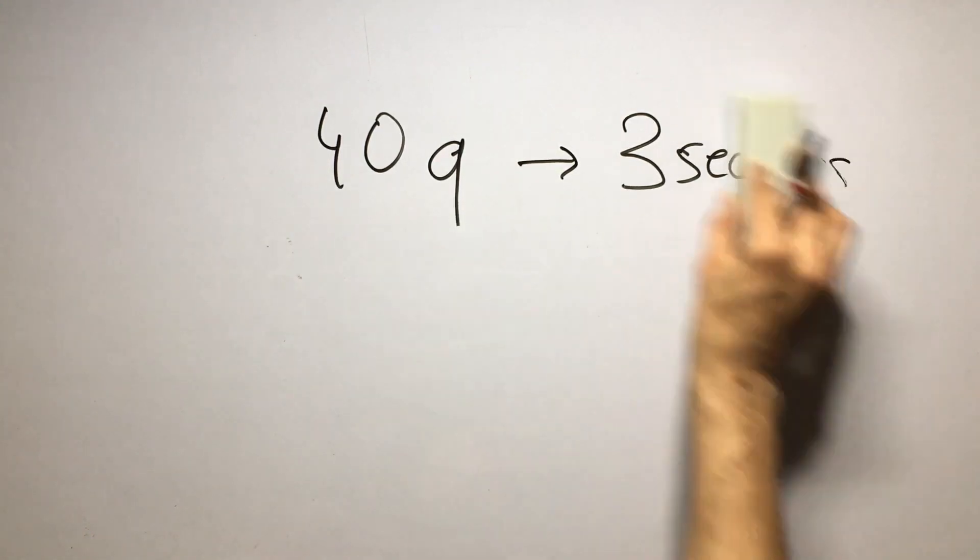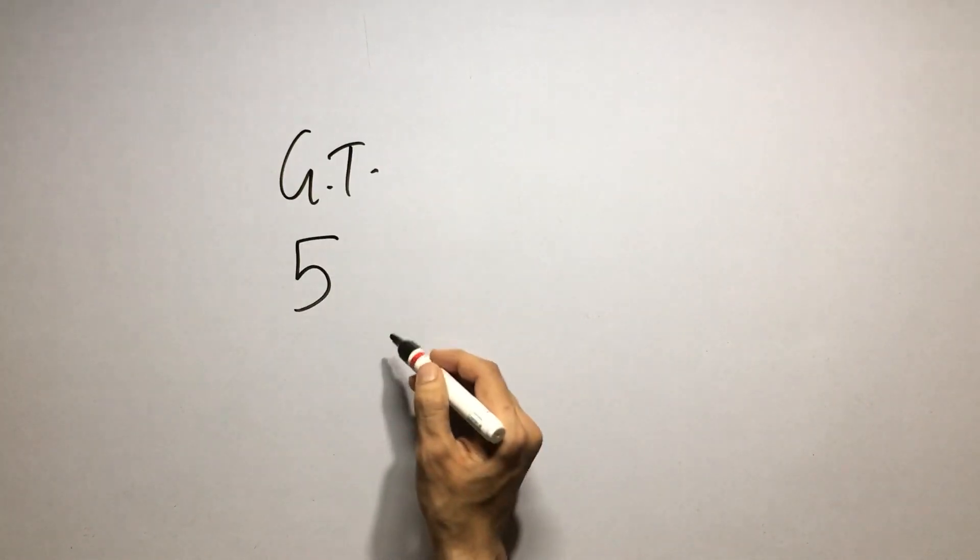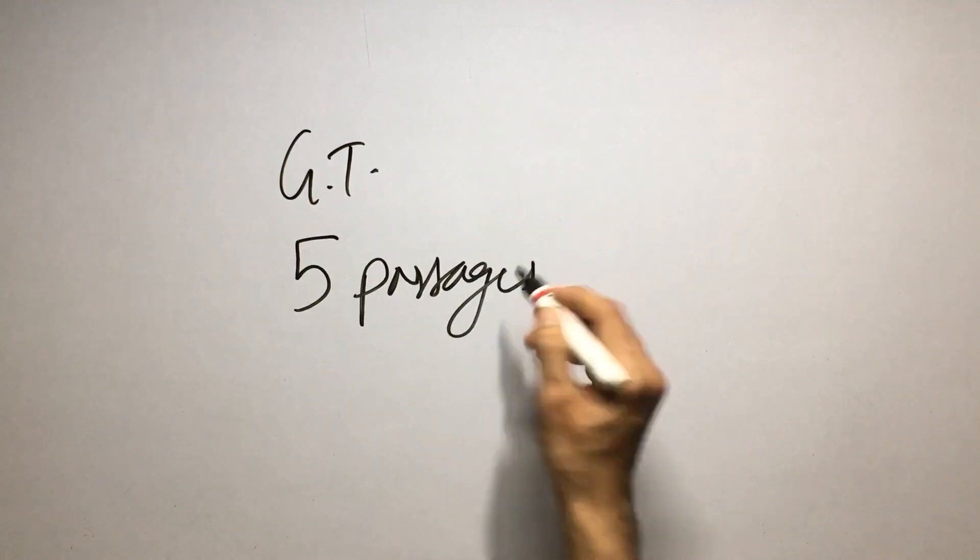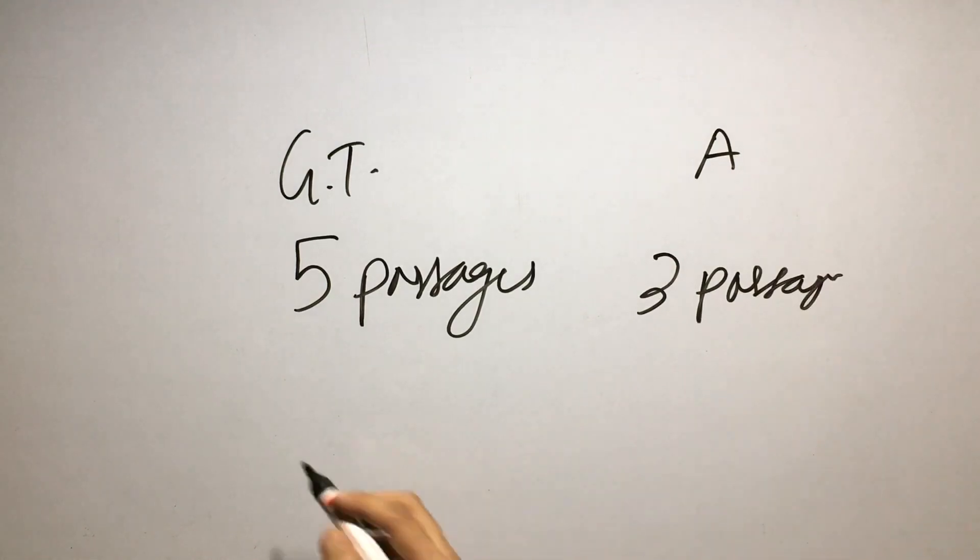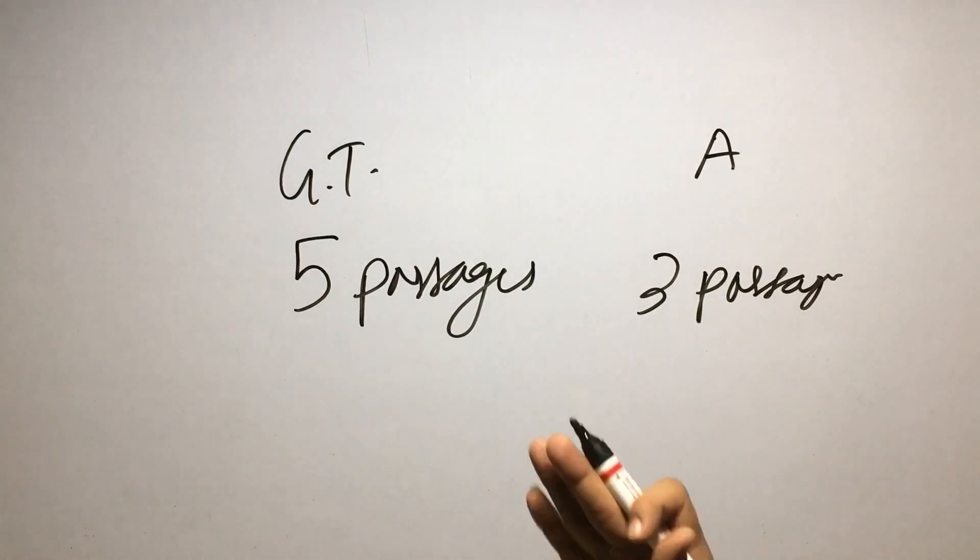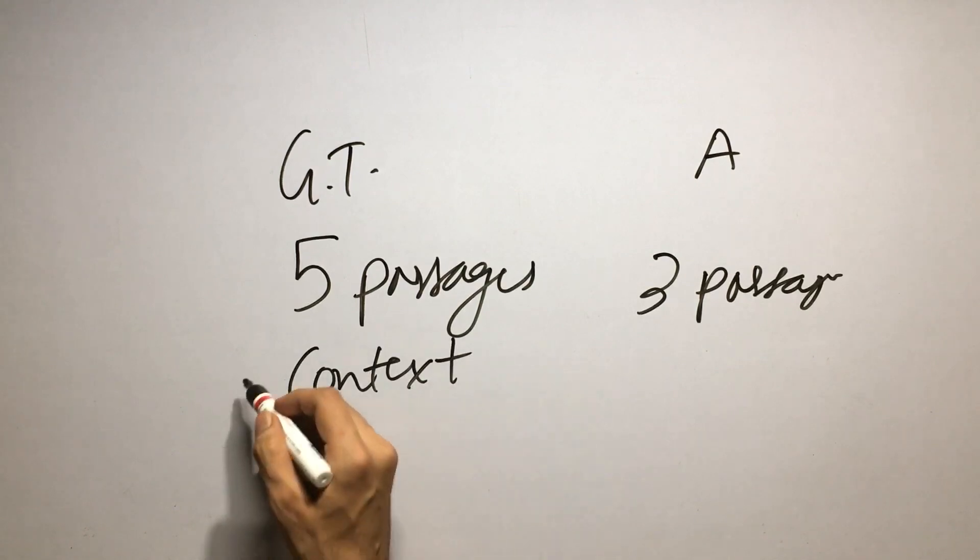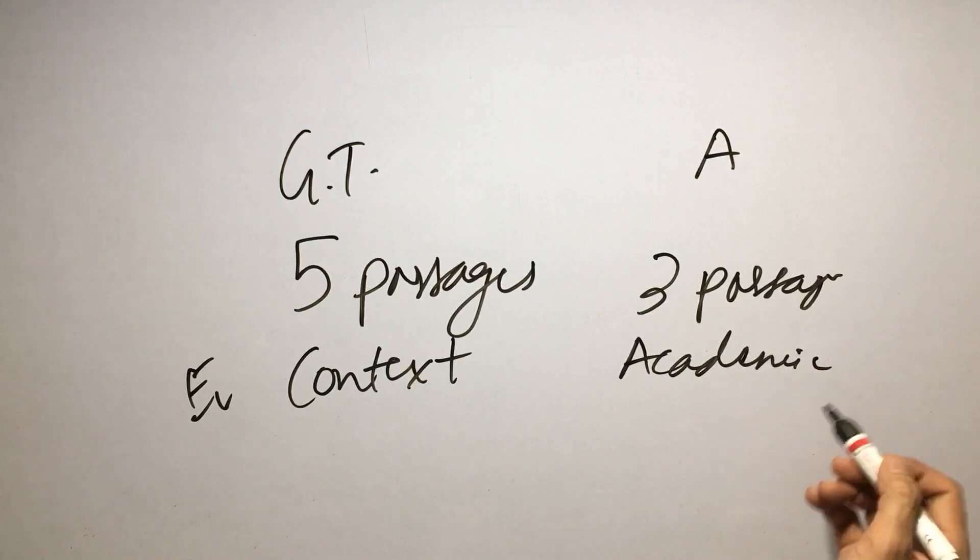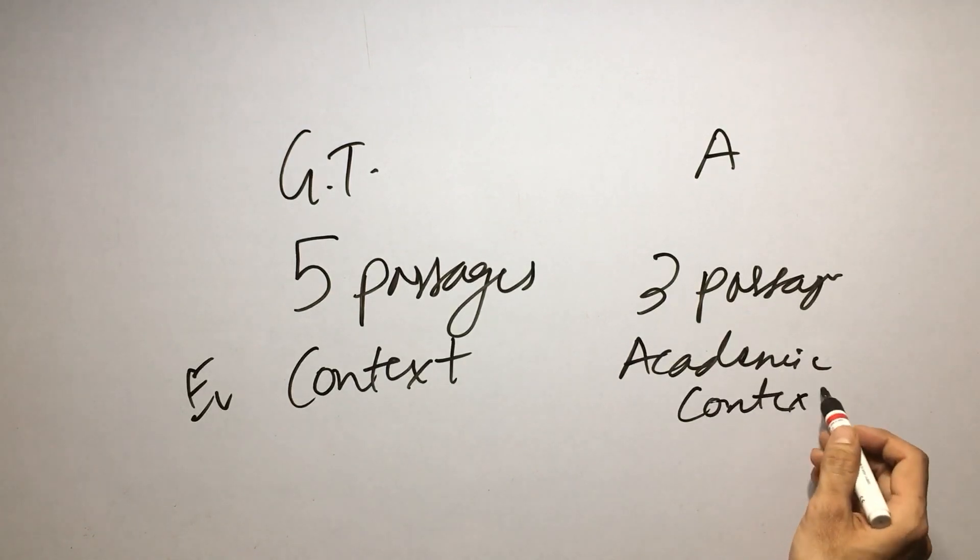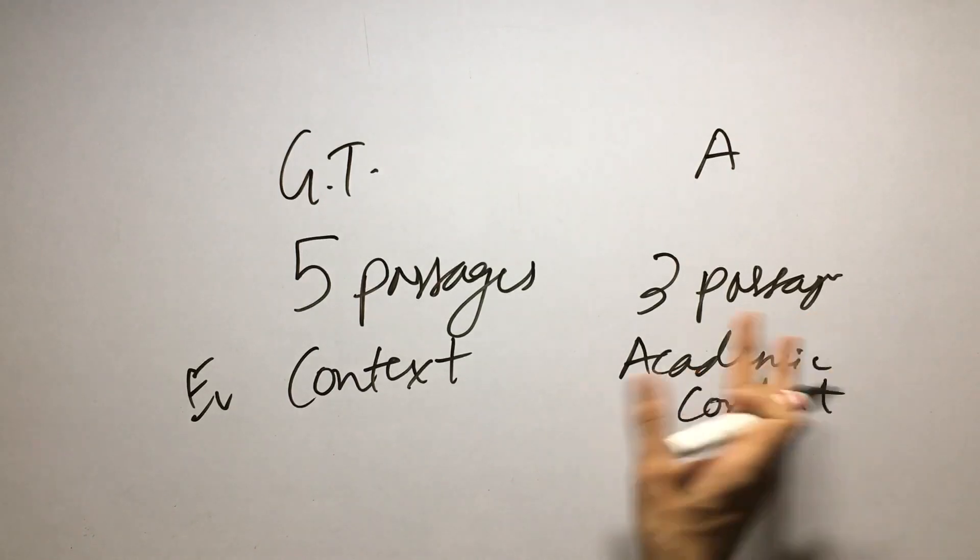First of all, the number of passages that are provided in reading are different in academic and general training. In general training, there will be five passages that will be provided from which you will be answering questions. In academic, these are three passages. Secondly, these passages come from what context? Work related context, advertisements and television. So context is the difference. So it's everyday context. It's always academic context. That means your study related context. So all the passages are being taken from textbooks or journals, or probably some research paper.